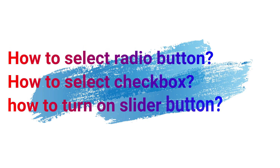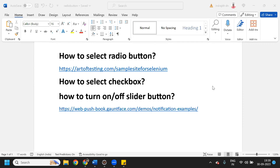In this session we will see how to select a radio button, how to select a checkbox, if you have multiple checkboxes how to select all of them, and lastly how to turn on and off a slider button.